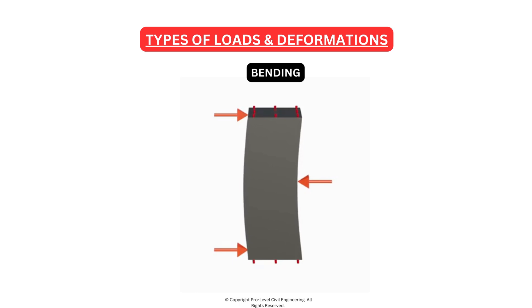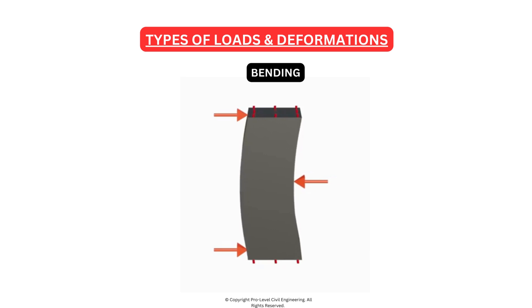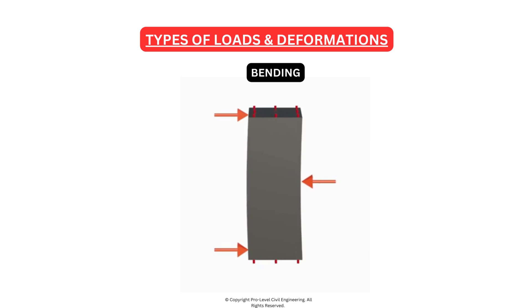5. Bending. When you bend a ruler, it experiences bending. It's a combination of compression and tension, causing it to curve.